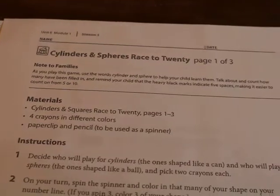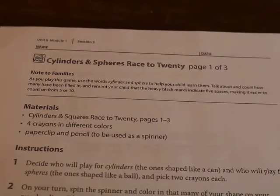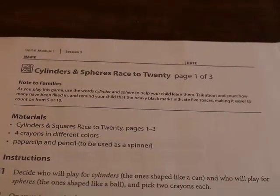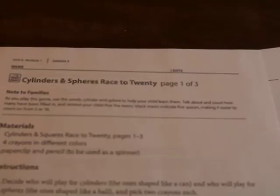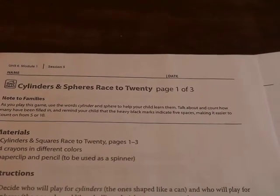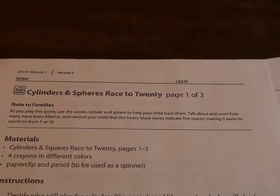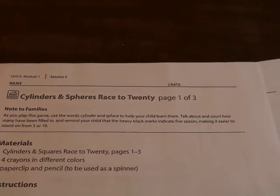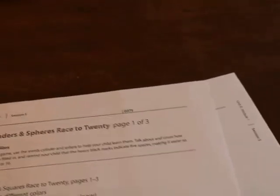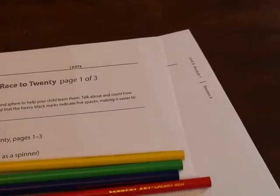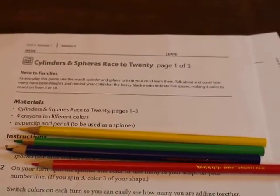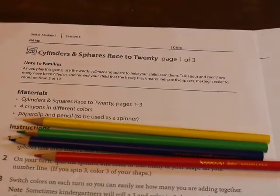Okay boys and girls, in your packet I want you to find this page: Cylinders and Spheres Race to 20. It'll be in the Wednesday part of your packet, and before you start the game you're going to need to get four different colored crayons. I'm going to use colored pencils.